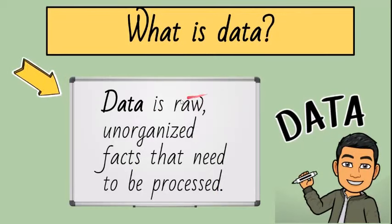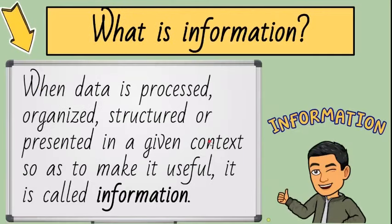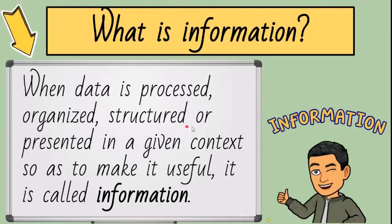When we say data, it is raw, unorganized facts that need to be processed. Data can be something simple and seemingly random and useless until it is organized. When data is processed, organized, structured, or presented in a given context so as to make it useful, it is called information.